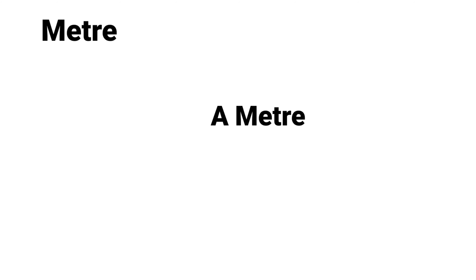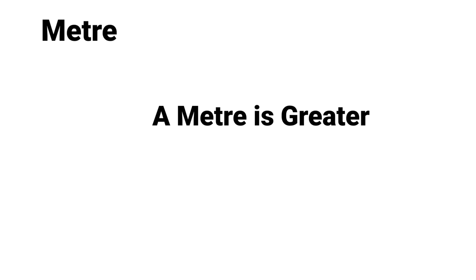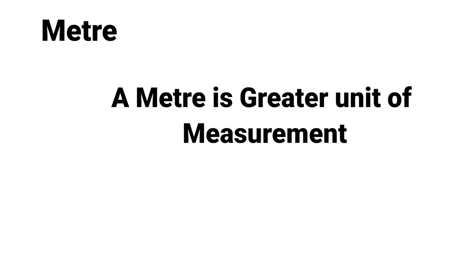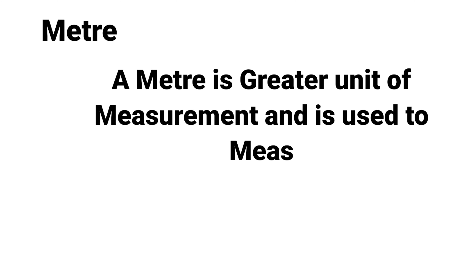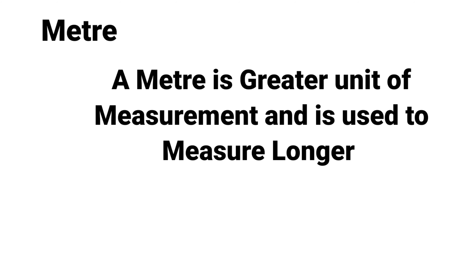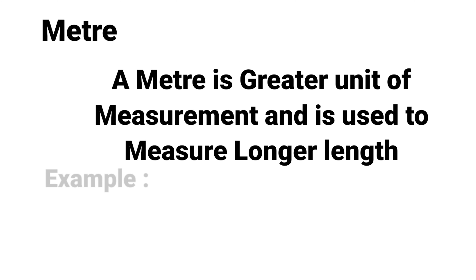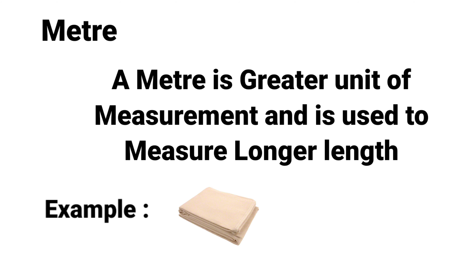The next unit is meter. A meter is a greater unit for measurement and is used to measure a longer length. For example, cloth. How can you measure the cloth? The cloth is measured by meter, so the cloth is one meter.